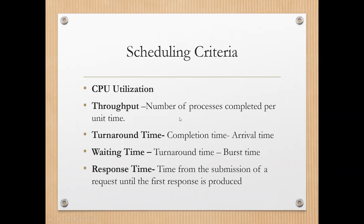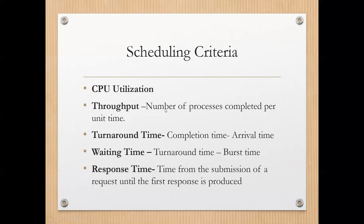The next criteria is throughput, which is the measure of work done by the CPU — the number of processes executed and completed per unit time. Throughput may vary depending on the length and duration of your processes. For example, one process can take 10 minutes while 10 processes take only one minute — so the count will differ.